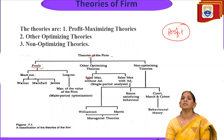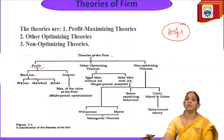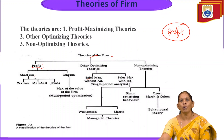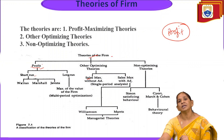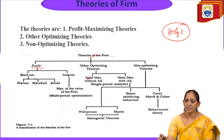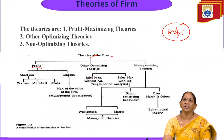Sales maximization with advertisement applies when a product is new or an old product with new features added. In this case we need to familiarize the product to consumers through advertising. These are the two types within the other optimizing theories.